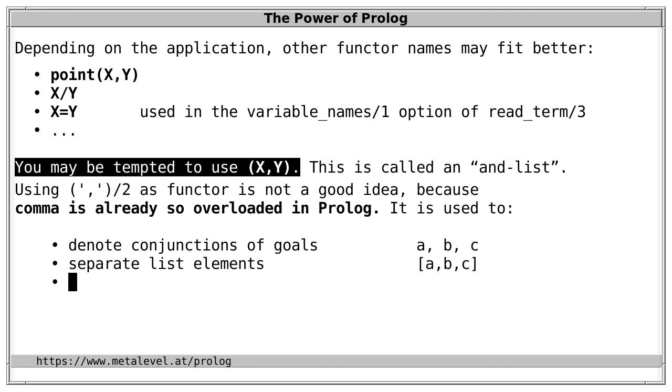Second, to separate list elements as in A, B, C, and third, to separate arguments of terms and predicates as in A, B, C. Therefore, it's true that you can use any functor you want, yet it's also true that using comma as functor is a bad idea.